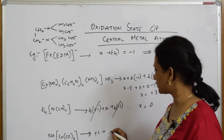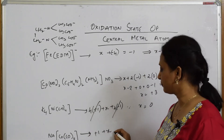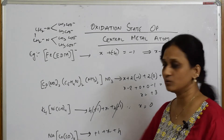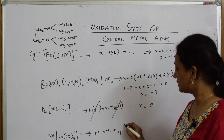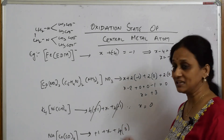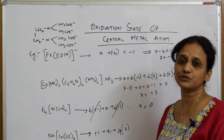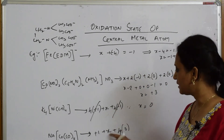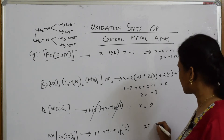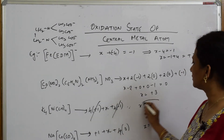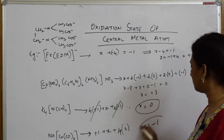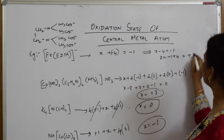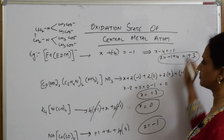To find the oxidation state of cobalt, set it as X. Solving that equation: X = +3. To summarize: for the first complex, the oxidation state is 0; for the second, −1; for the third, +3; and for the fourth, +3.